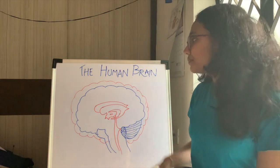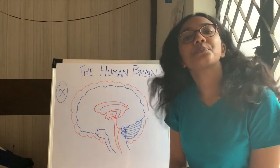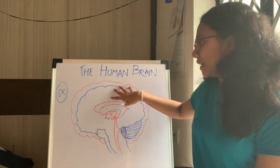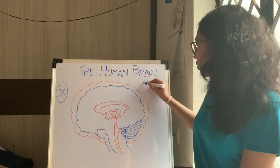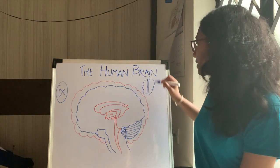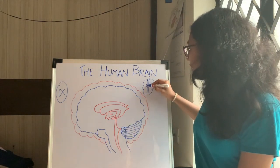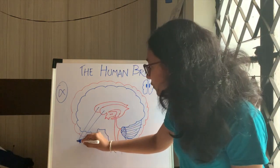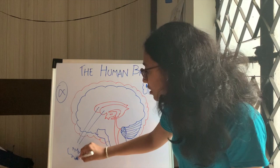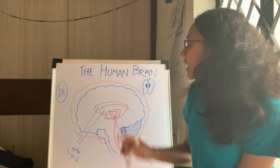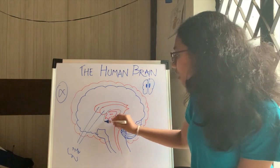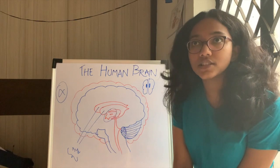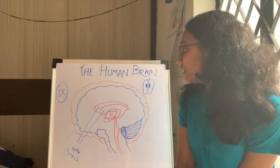Now let's come to ventricles. There are four ventricles. The first two are known as lateral ventricles. Our brain is divided into two hemispheres, and there are two lateral ventricles here — these are the first and second ventricles, also known as the lateral ventricles. These two are then attached to the third ventricle, which is present in the diencephalon.